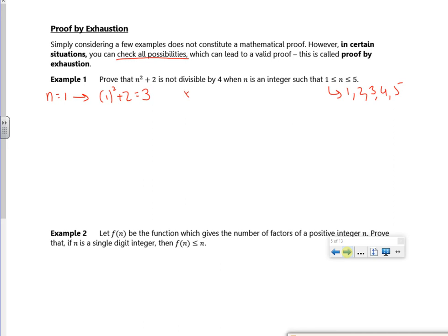If I use two, I get 2²+2. So that's going to be six. That's not divisible by four. If I try three, that's going to be 3²+2. So that's 11. That's not divisible by four.